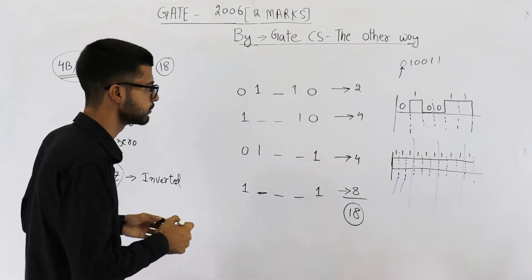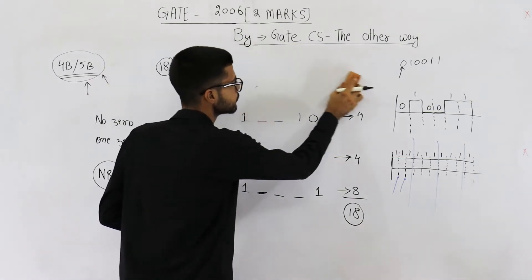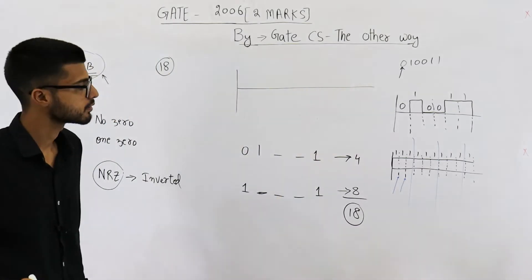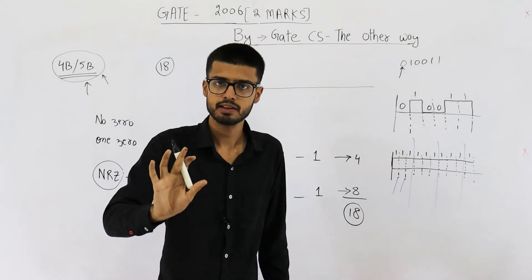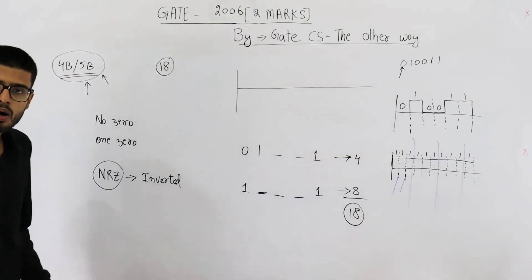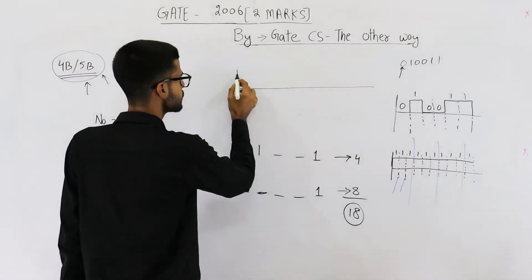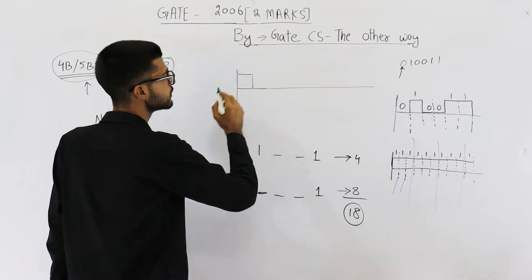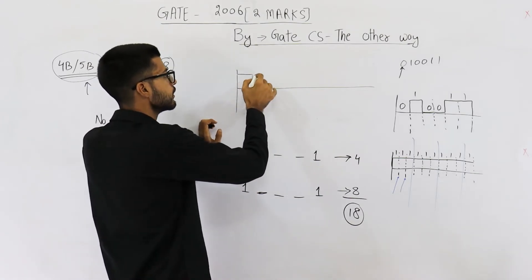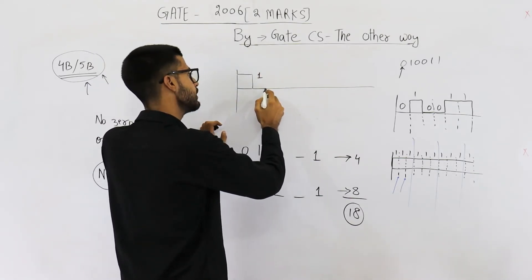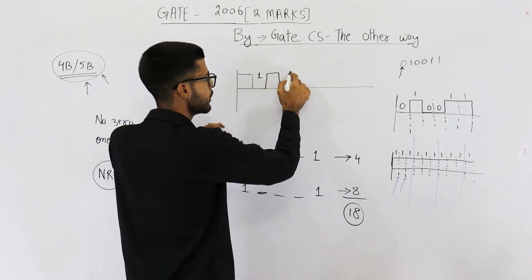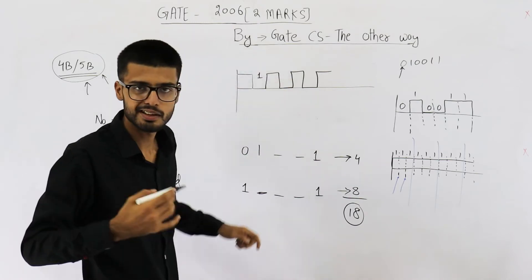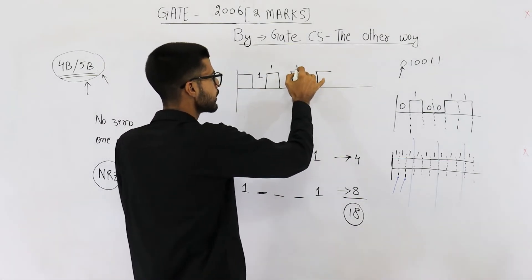In such a scheme, if you want to send all ones: initially the signal was high, you want to send a 1 so you change it from high to low. Next bit is 1 — change again, again, again. So the transitions from low to high and high to low indicate each bit is 1. The receiver can easily count the transitions.